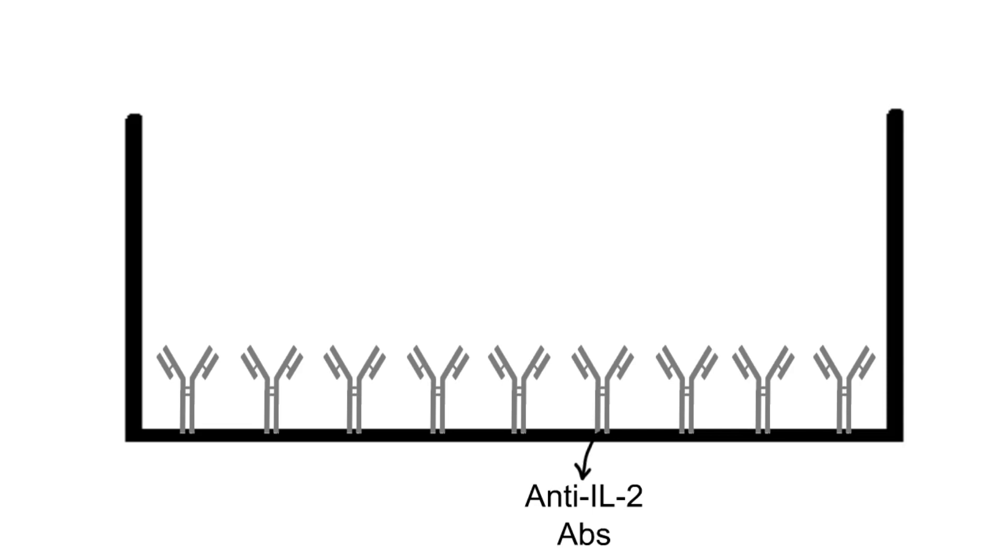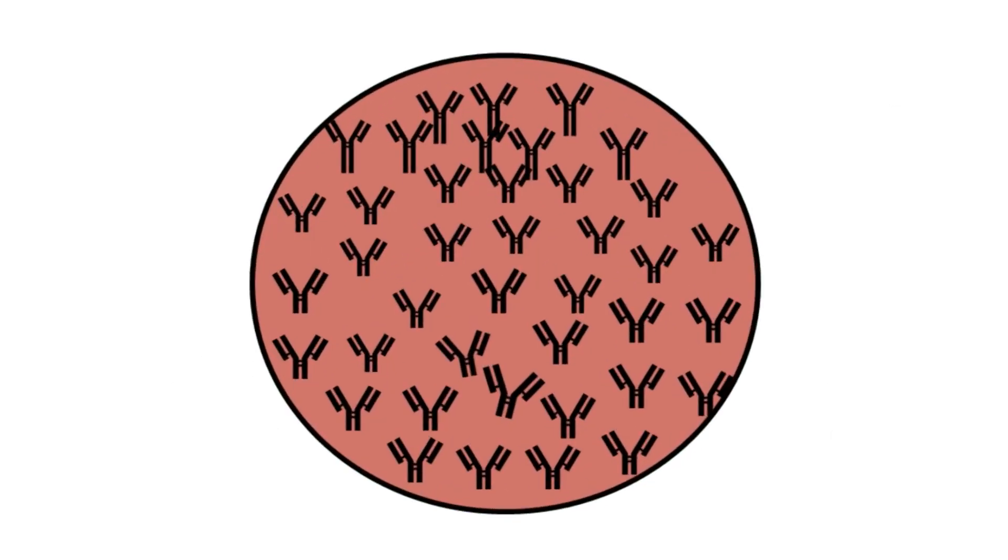In this diagram, I am showing only one row of antibodies in the well but actually the antibodies are coated to each and every corner of the well like this.